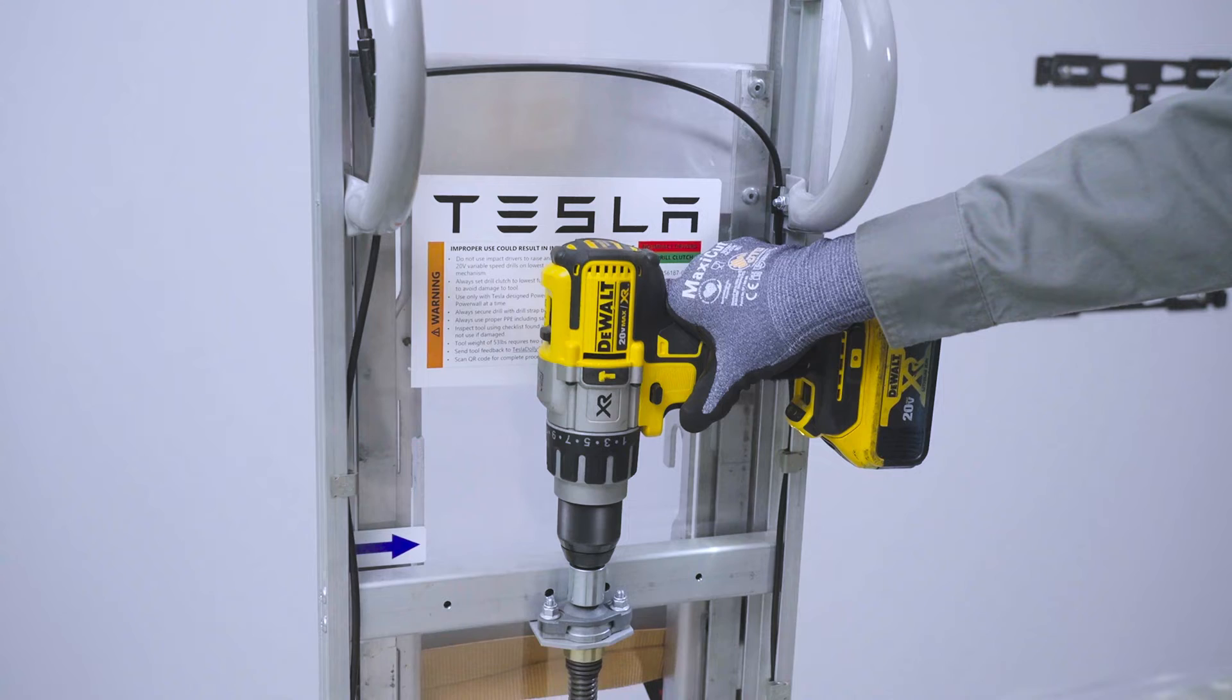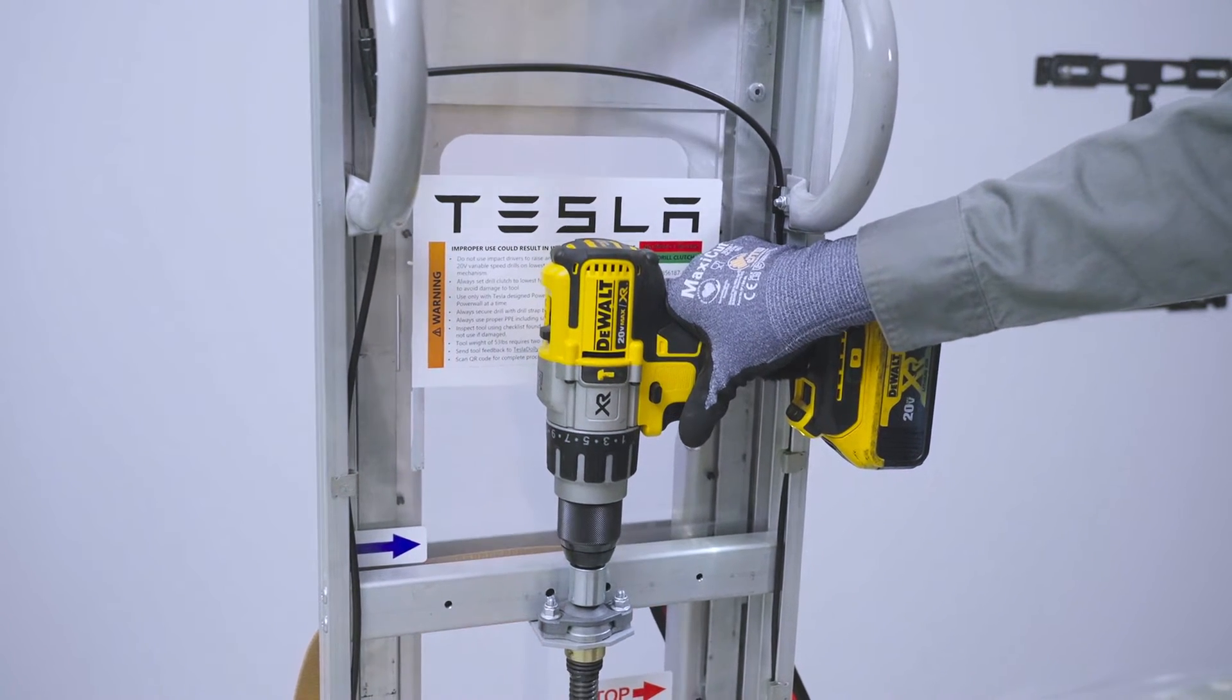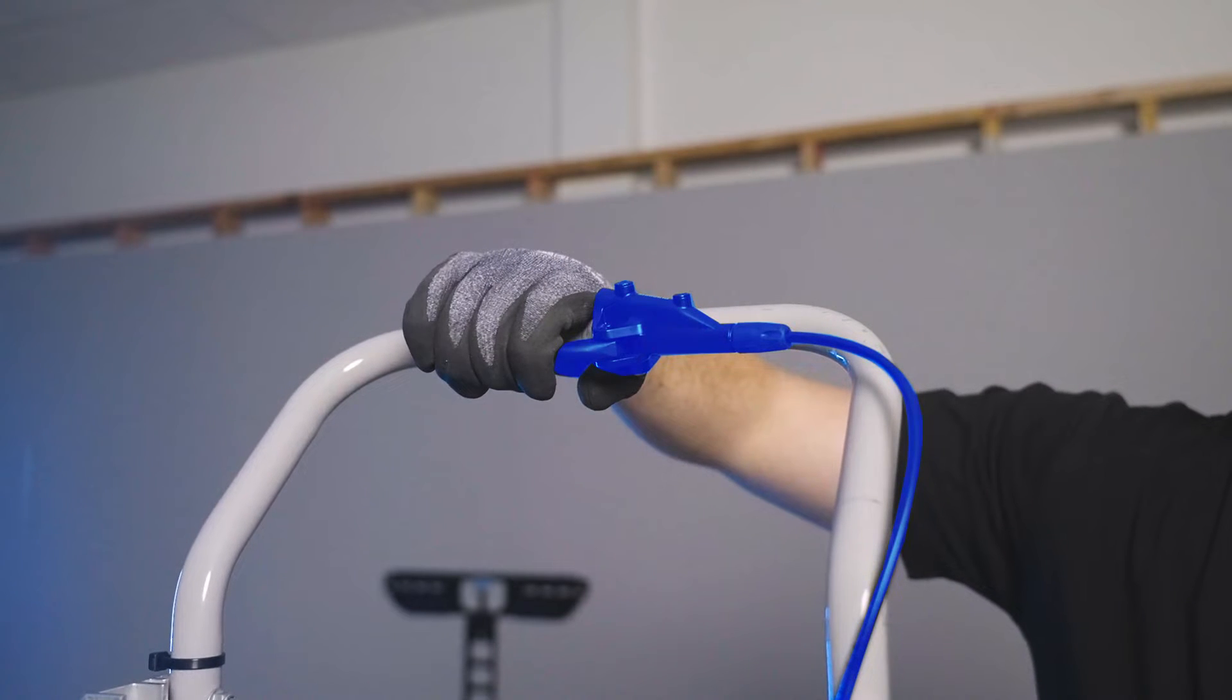Powerwall Dolly also features a lifting platform that is drill-driven to easily raise Powerwall for mounting. The Dolly includes a handbrake for extra control over Powerwall when moving it to the install location.